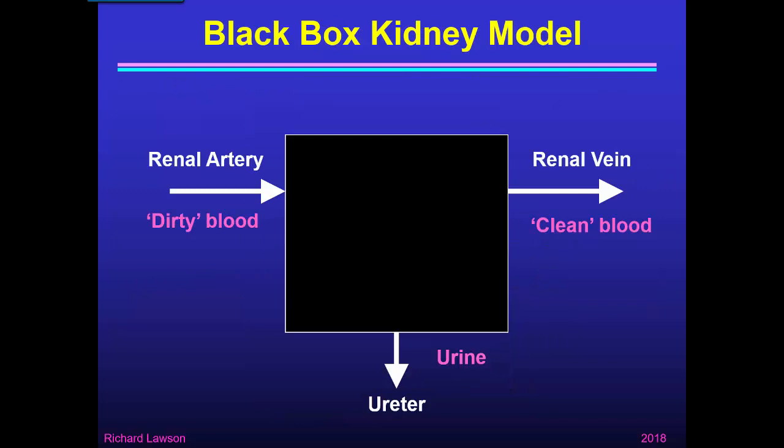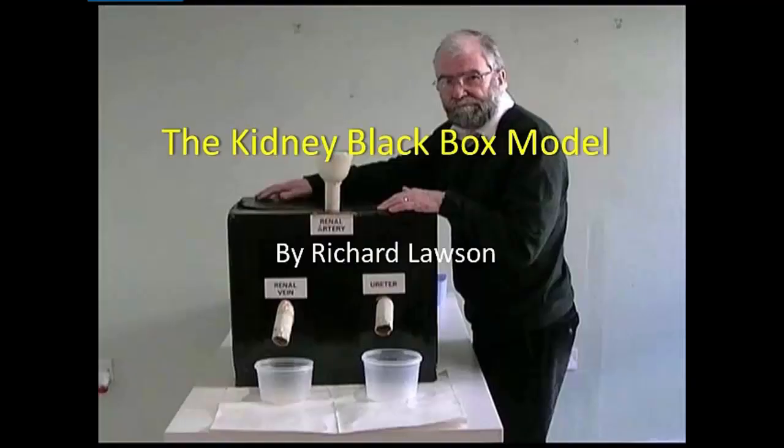We can describe how the kidney works using my favourite model — a black box model. For a black box, you only need inputs and outputs and don't need to know what goes on inside. In the case of the kidney, we have one input — the renal artery where dirty blood comes in — and two outputs: the renal vein where clean blood comes out, and the ureter where the urine comes out. Here's a video demonstrating my black box model.